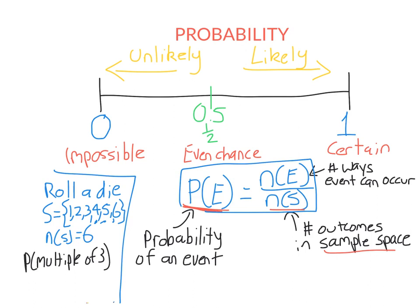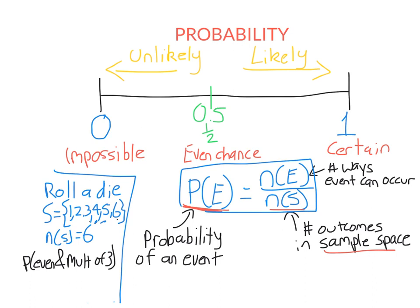Let's find the probability that I roll a multiple of 3. How many ways can it occur? I could get a 3 or a 6 — they're multiples of 3. So there are 2 ways it can occur out of 6 outcomes in total, which is 1 over 3, or 0.3 recurring. Since 0.3 recurring is a non-terminating decimal, it's probably much easier to write it as a fraction.